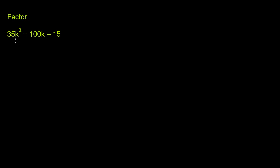We're asked to factor 35k squared plus 100k minus 15. Because we have a non-1 coefficient out here, the best thing to do is probably to factor this by grouping.